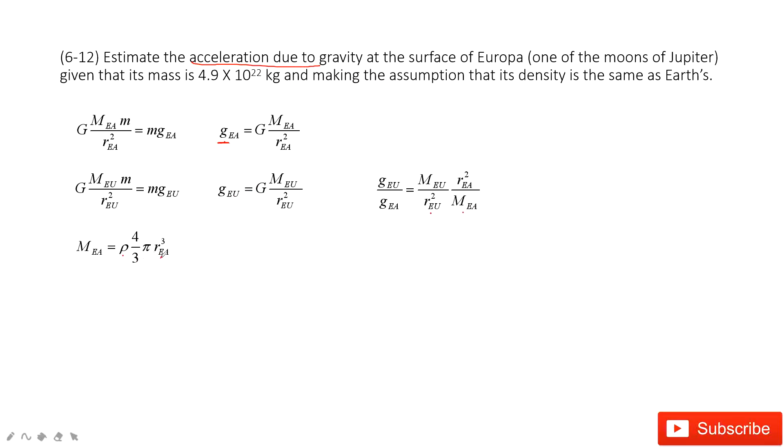The mass of the Earth is the density times its volume, right? Because this is just Earth, we can consider the radius for the Earth is REarth. So it is 4/3 π REarth cubed. Similarly, for this Europa, we can get this one.